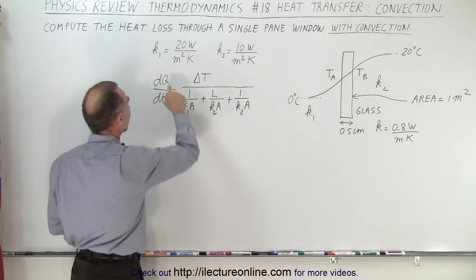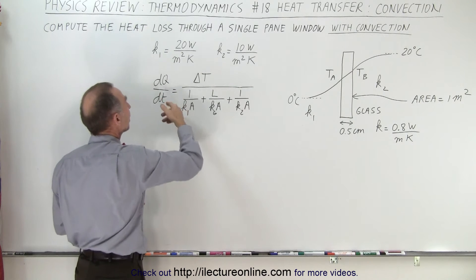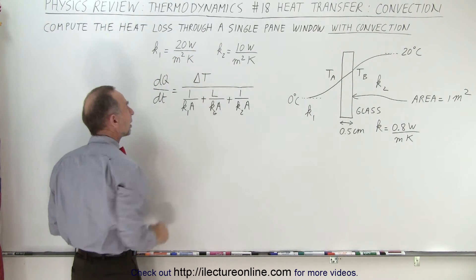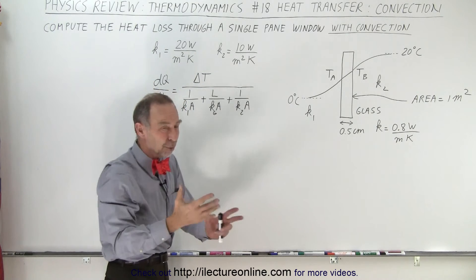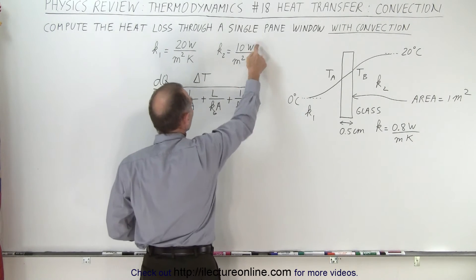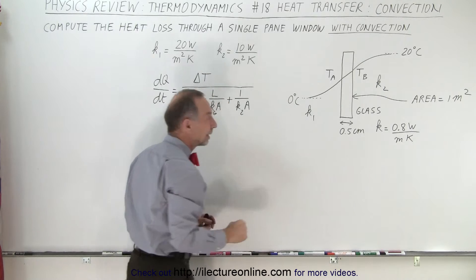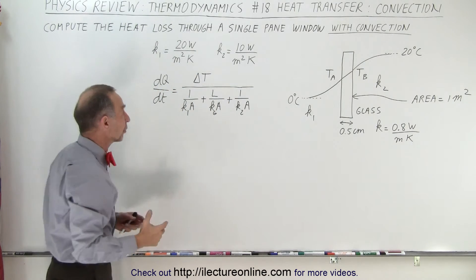Let's say that on the outside there's a little bit more wind. It is 20 watts per meter squared per Kelvin, and on the inside there's less motion of air, so we call it 10 watts per meter squared per Kelvin. Then the equation becomes as follows.